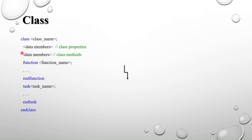Now let's look at the syntax for writing a class. 'class' is a keyword, and 'endclass' closes it. You give the class a name, and inside the class you write data members — the class properties which are variables — and methods, which are functions and tasks.